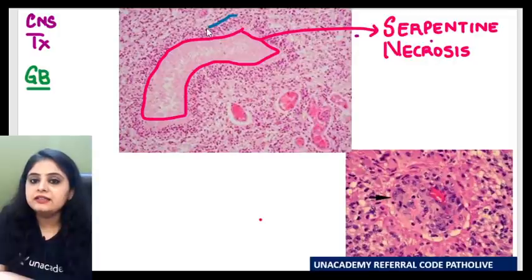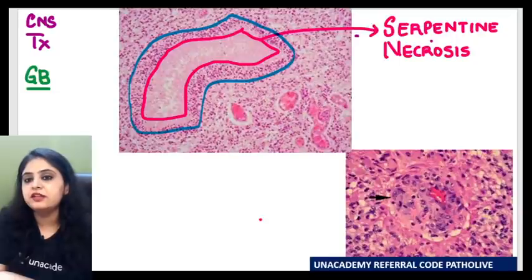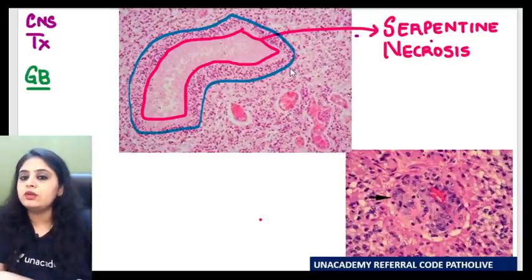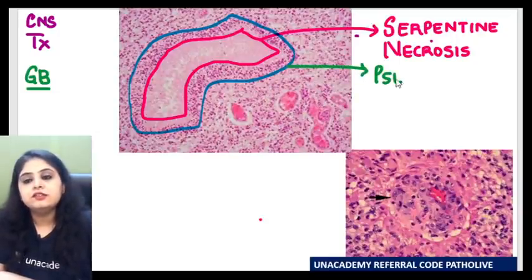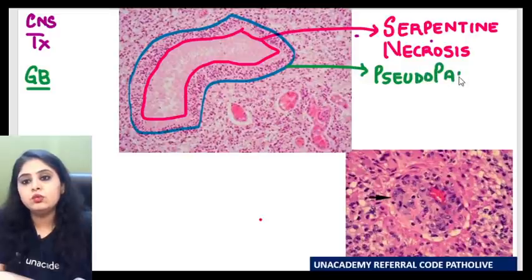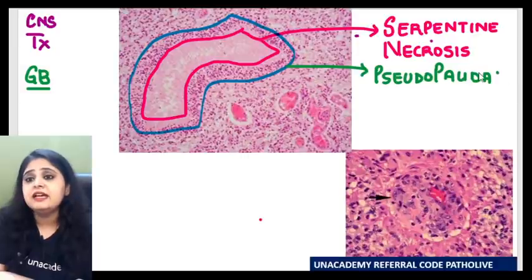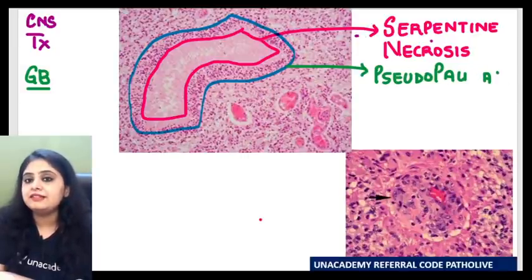When I highlight the cells which are around the serpentine necrosis, these are all the tumour cells. What do I call this second feature? This is known as pseudopalisading of the tumour cells. Please note these terms because in the question, this is exactly how it is going to be presented to you. Remember: pseudopalisading of the tumour cells.